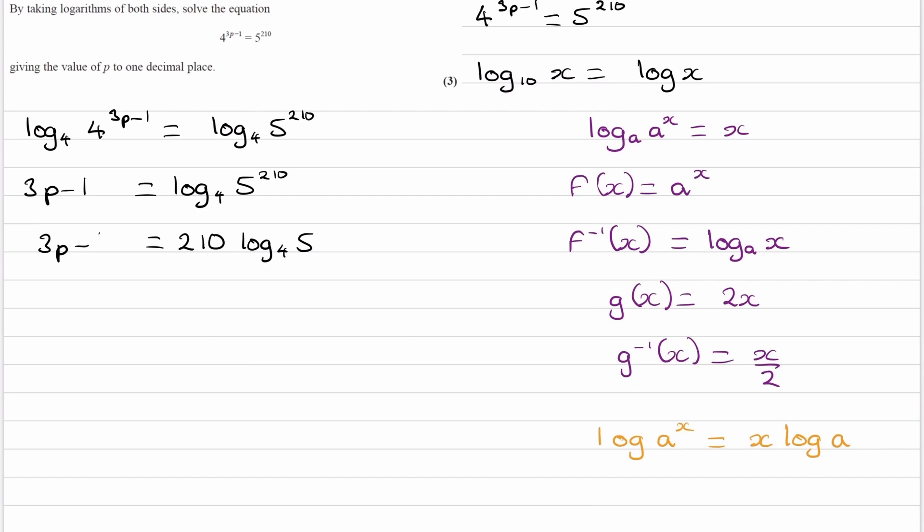And the right-hand side will then become 2.10 log to the base 4 of 5. And on the left-hand side, that stays the same, 3p minus 1. And now, so this we can now work out because we're not doing 5 to the power of 2.10. So we don't have this massive number that our calculator has to work out. So we should be able to type this into our calculator. Let's not do that now, though. Let's first rearrange it. So we now rearrange for p.